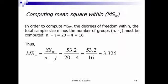The mean square within is also a simple computation. We take the sum of squares within and divide by degrees of freedom within. Degrees of freedom within is the total sample size minus the number of groups. We had 20 participants and 4 groups, so 20 minus 4 is 16. We take 53.2 divided by 16, which gives us 3.325.